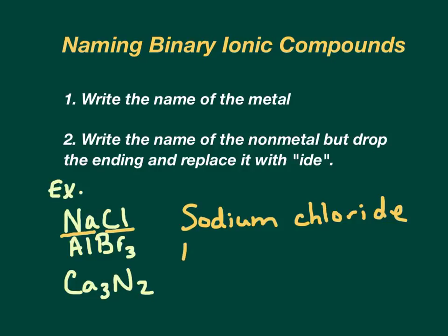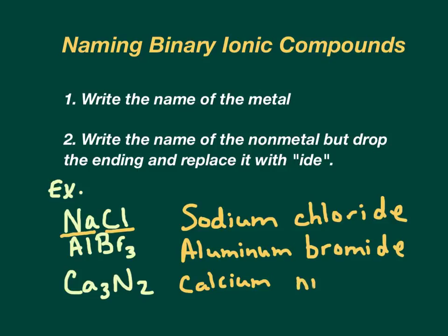For this next one, we write the name of the metal, which is aluminum. Notice I'm not dropping anything off of there. Then bromine is the nonmetal. There are three of them, but remember that's the way they have to join. Aluminum and bromine have to join up: one Al and three Brs. So this is going to be aluminum bromide. Drop the ending and put ide. And this next one, it's a metal and a nonmetal, it's binary with two different types of elements. So this is going to be calcium, just the name of the metal, and then nitride. You drop off the ogen on nitrogen and put ide there.